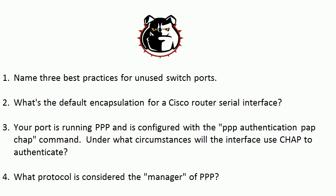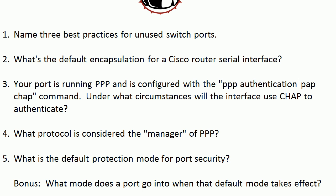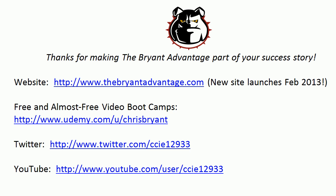Now, port security — check out my YouTube channel for more videos on this, as it's a very important exam topic. The default protection mode for port security is shutdown. When that mode takes effect, the port will show down/down for the physical interface and line protocol, and it will also display ERR-disabled — error disabled. Make sure to search for my port security video on YouTube for a full demonstration.